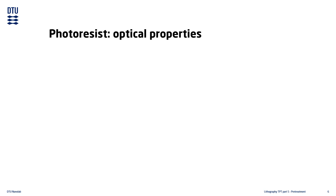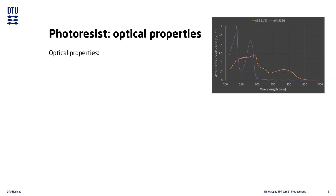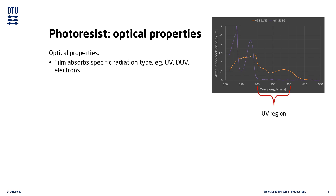A photoresist film has a number of interesting properties. If we look at the attenuation coefficient — a measure of how much light is absorbed in the resist, correlated with the photosensitivity at different wavelengths — we can get a better understanding of some optical properties. Comparing a standard UV-resist (shown in orange) with a standard deep-UV-resist (shown in purple), we see that the UV-resist absorbs light in the UV region, while the deep-UV-resist does not absorb there at all. Both resists, however, absorb light in the deep-UV region. From this graph we might conclude that the UV-resist can be used with both types of radiation, so why even bother with a separate deep-UV-specific resist?